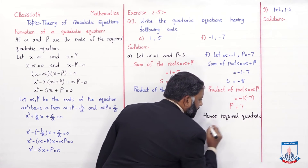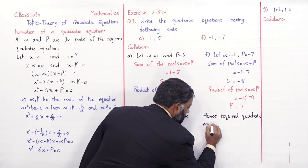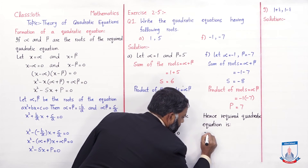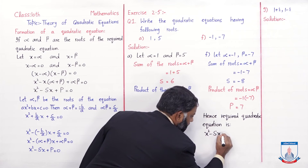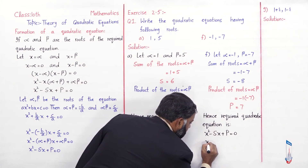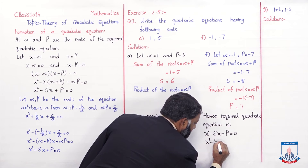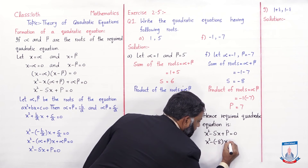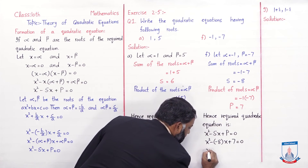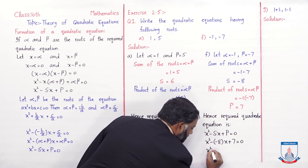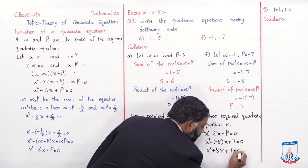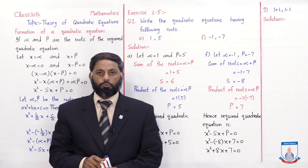Hence the required quadratic equation is x² - Sx + P = 0. Putting S = -8 and P = 7: x² - (-8)x + 7 = 0. Simplifying, minus into minus becomes plus: x² + 8x + 7 = 0. This is our required quadratic equation for part F.